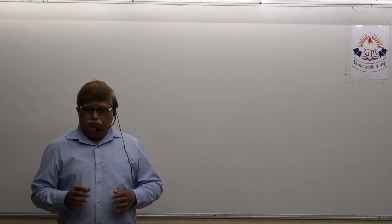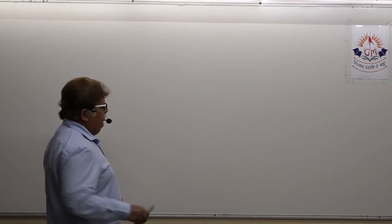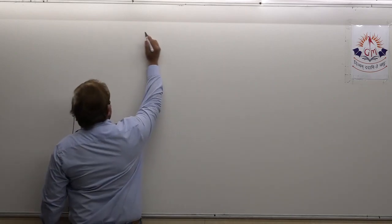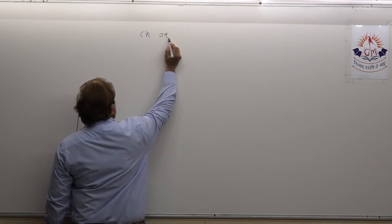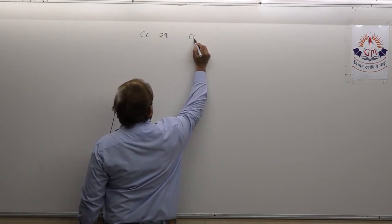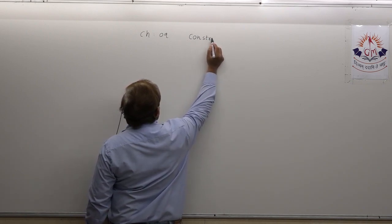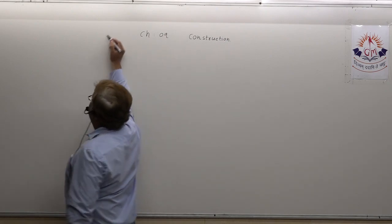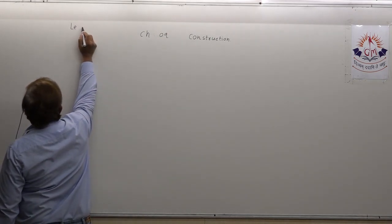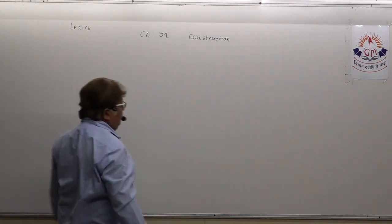Now, what we are going to do in today's lecture number 3 is construct another quadrilateral in which the condition for constructing the quadrilateral is going to change. So first, before we start, let us write the title of chapter number 9. The name of the chapter is Construction, where we are going to construct quadrilaterals only, and today you are attending lecture number 3 of this chapter.